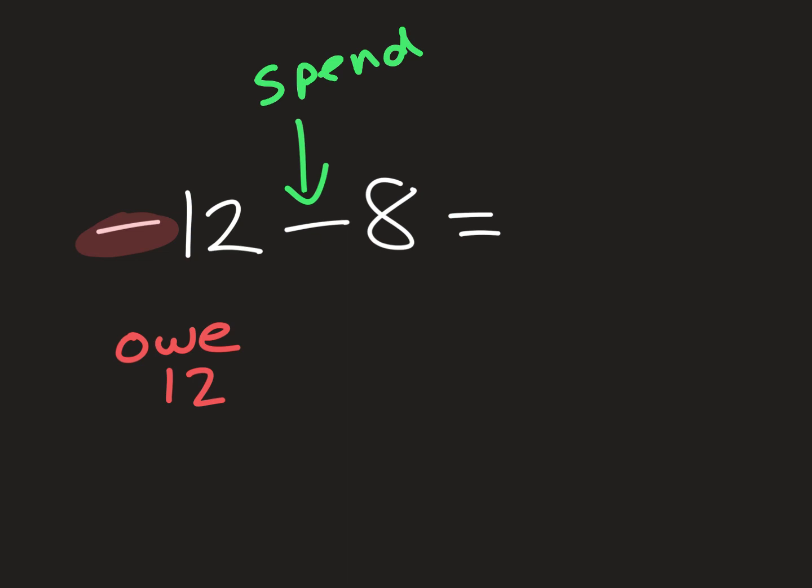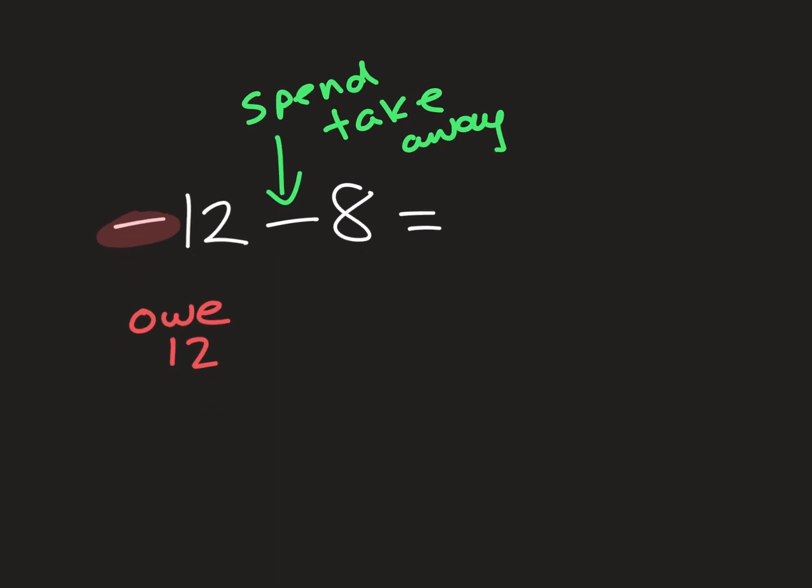Because when you're subtracting, we're taking away, right? So I'm already negative in my account. And then I take out another $8. So that means I'm gonna get even more negative.